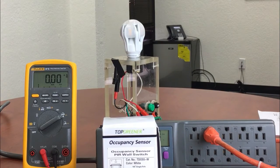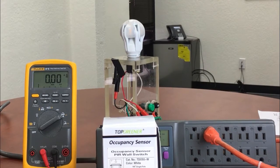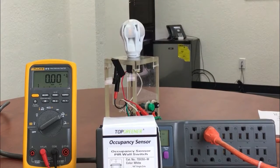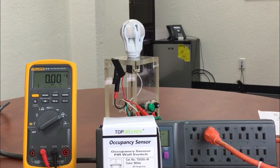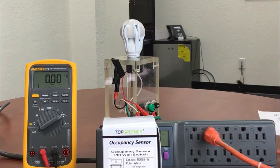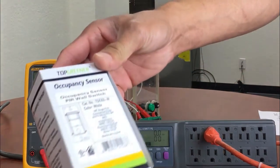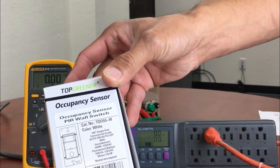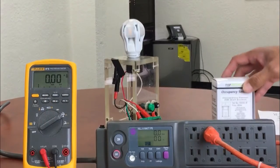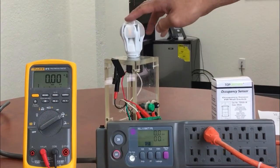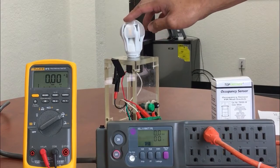Today we are going to test the TDOS5 by Top Greener and measure how much electricity it is using. We're going to use the Fluke 87 multimeter and the kilowatt PS10 to make these measurements. You can see this is the TDOS5 and our control will be the Sylvania 8 watt LED light bulb.